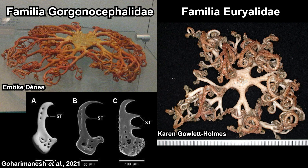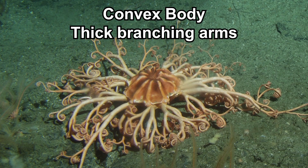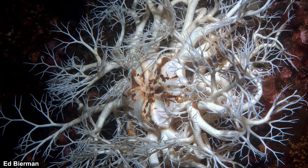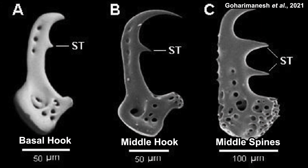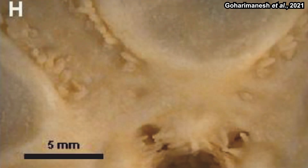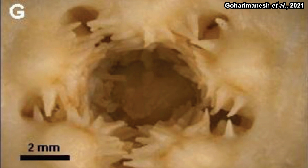The Gorgonocephalidae family have hook-like spines on their arms, while the Euryalidae family don't. Gorgonocephalus have a convex body with thick dichotomous arms — each branch is thinner and even more branches exist towards the tip of their arms. They can have up to 5,000 arm tips. The size and shape of their hooks and spines also varies between regions of their arms.